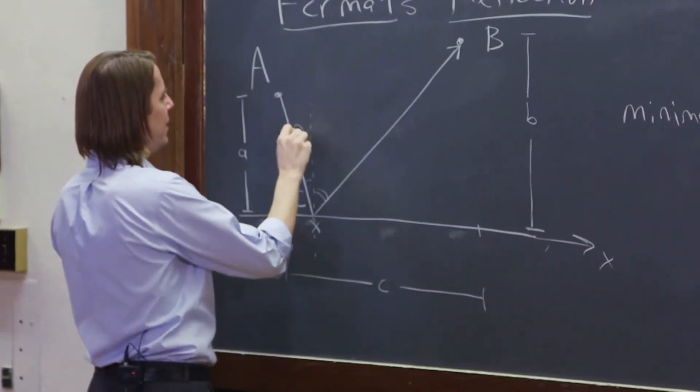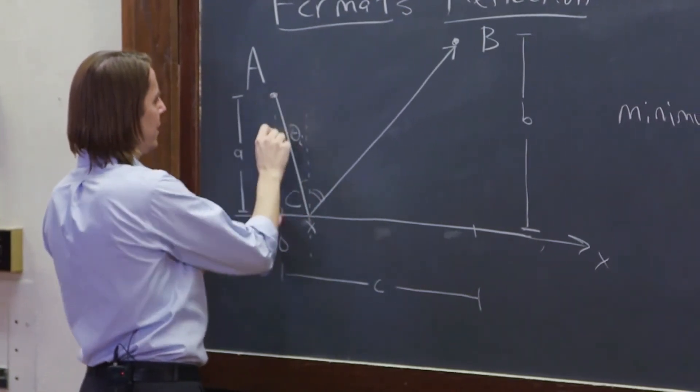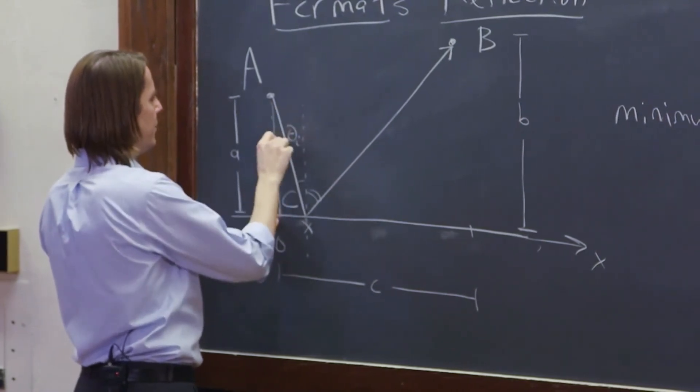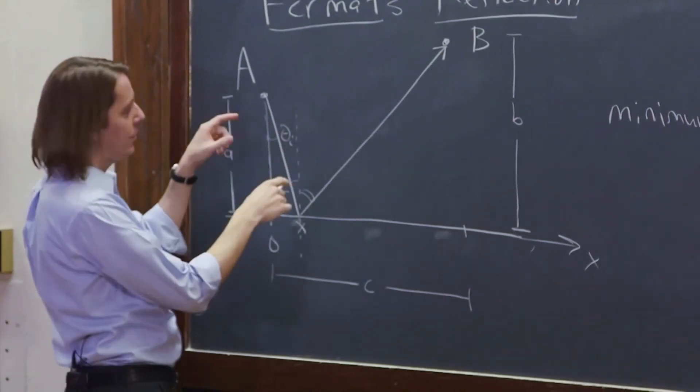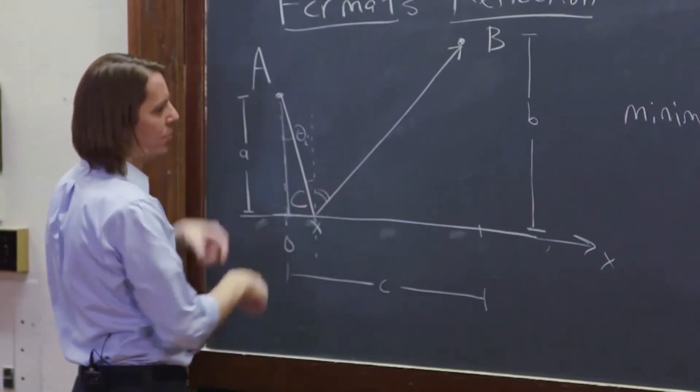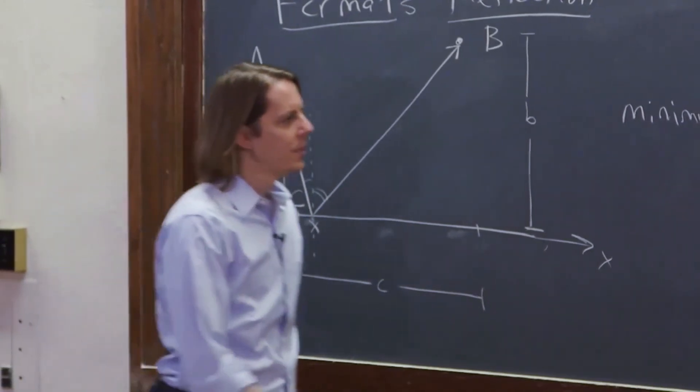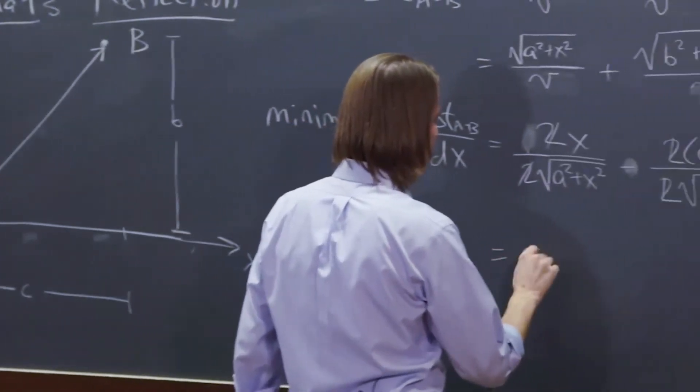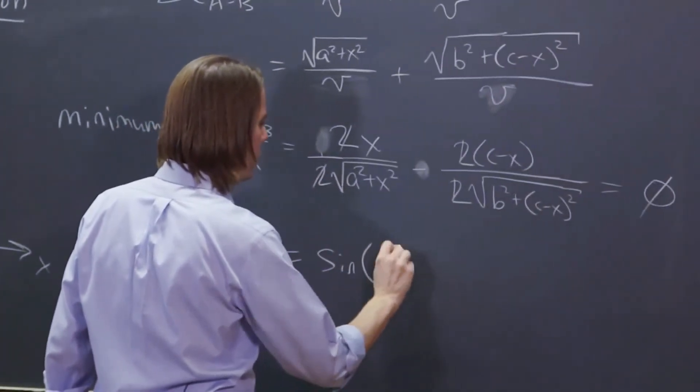So we actually know we're getting the sine of this angle. If this is theta incident, then this is also theta incident from something I learned in the seventh grade. And then the sine of that is opposite over hypotenuse. So X over the square root of X squared plus A squared. So this is actually equal to the sine of theta incident.